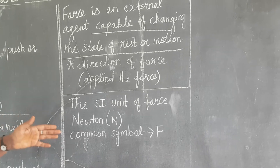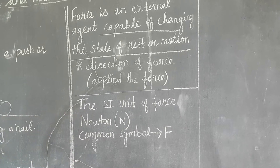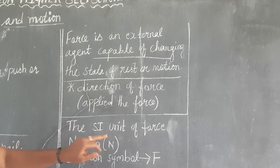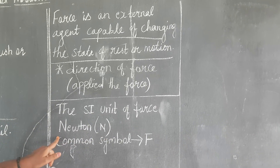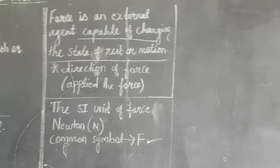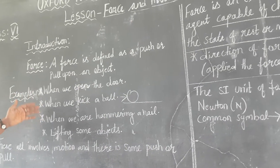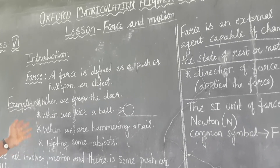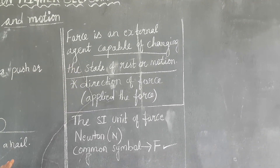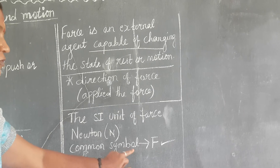The SI unit of force is Newton — SI unit meaning standard system of unit. The SI unit of force is Newton and its symbol is N. The common symbol for force is F. So to summarize: the unit of force is Newton and the common symbol for force is F.